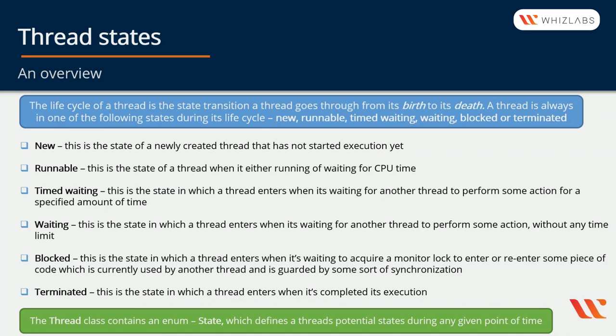This may sound a bit cryptic at the moment, but no worries, we'll decrypt it. Terminated is the state in which a thread enters when it has completed its execution. The Thread class contains an enum State which defines a thread's potential states during any given point of time, having the same constant names as the states we had here.